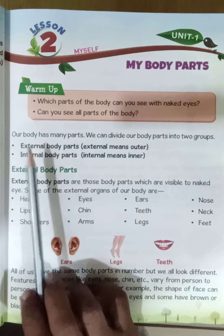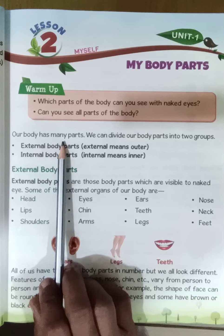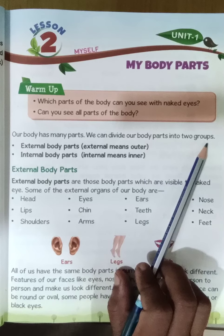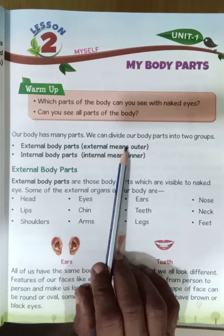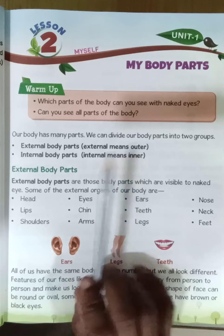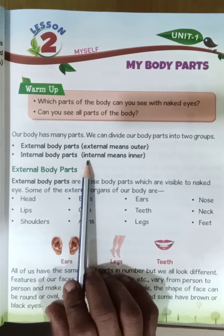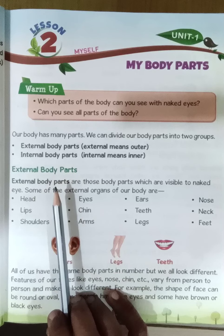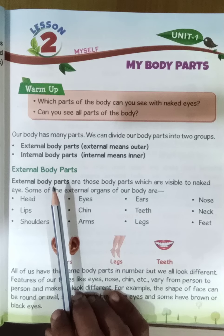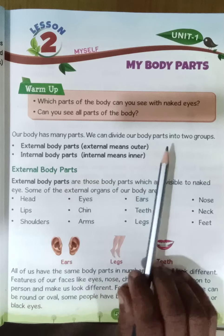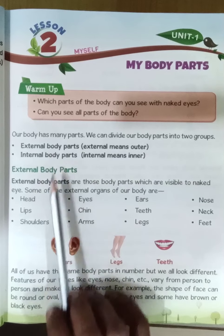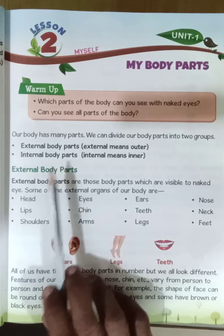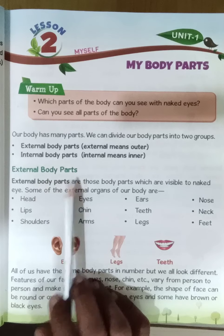Our body has many parts. We can divide our body parts into two groups: external body parts — external means outer — and internal body parts — internal means inner. So our body parts are divided into two groups: external body parts and internal body parts.